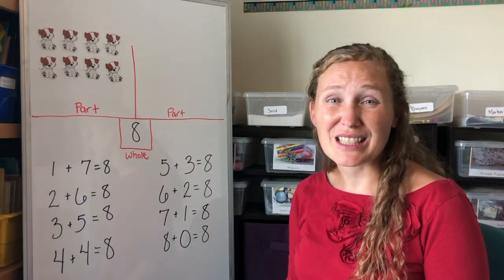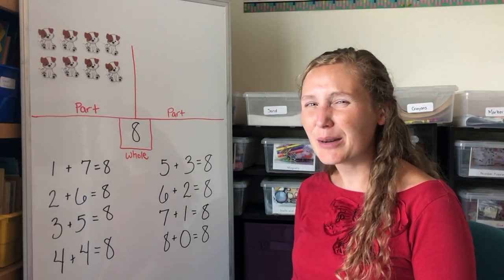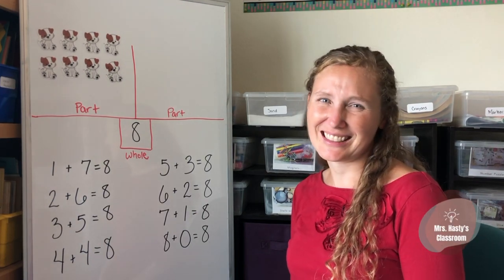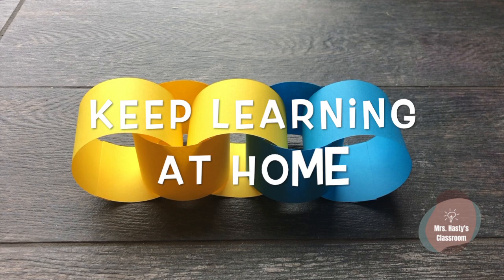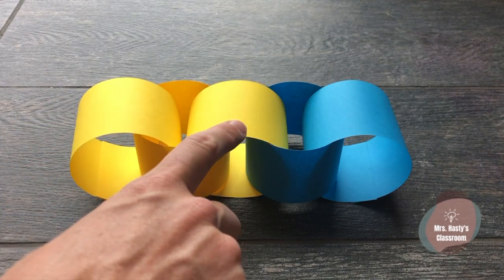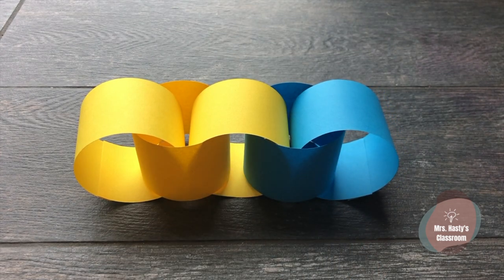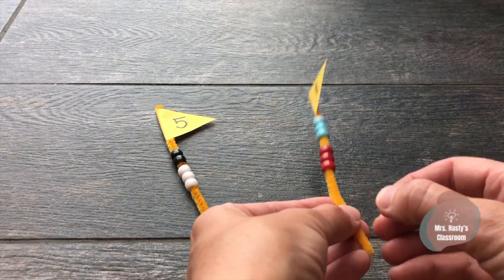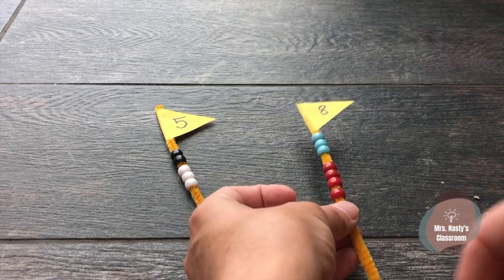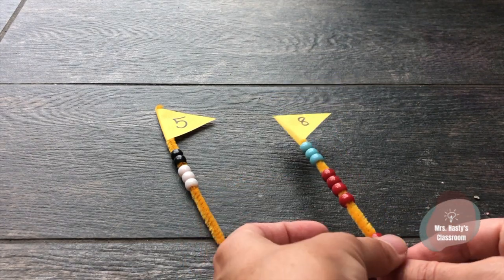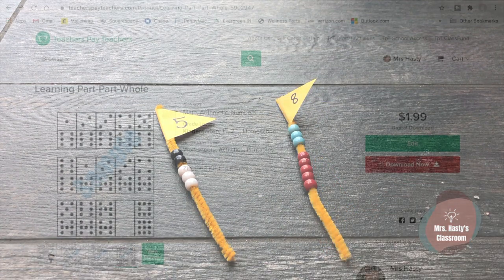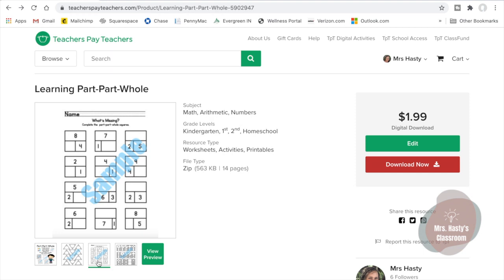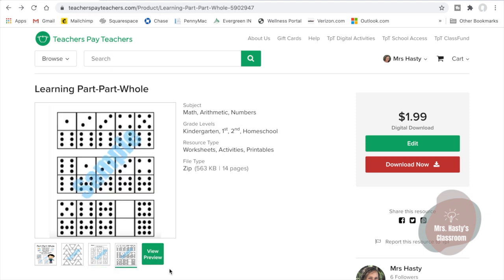Great job doing parts and wholes with me today, and I hope you'll come back again for more learning fun. Keep learning at home by making paper chains — part one color, part another color, then count to find the whole. Roll dice — you'll have two numbers, put the two parts together to make a whole. You can make pipe cleaner flags, put on beads for two parts, making a whole. And there are always printable resources available at my teacher's store at TeachersPayTeachers.com.